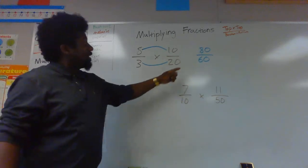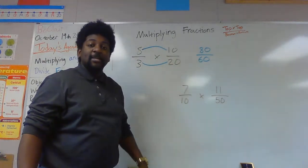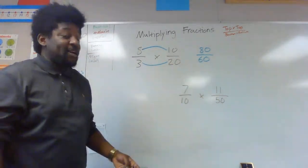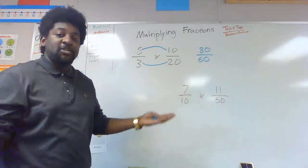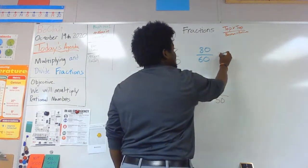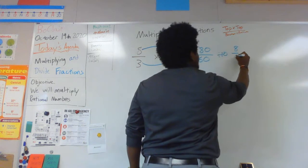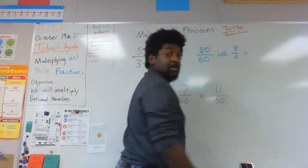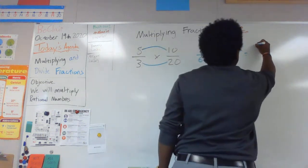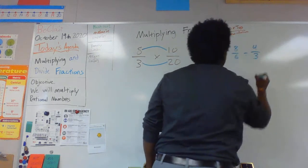So my answer is 80 over 60. Yes, you can simplify that. I'm not going to ask you guys to simplify that today, but you could simplify that by a lot. I could divide by 10 and get 8 over 6, and I could divide that by 2, which actually gives me 4 over 3.